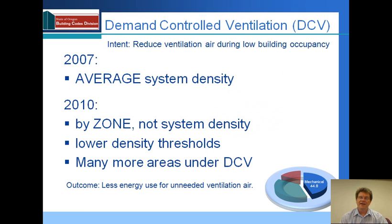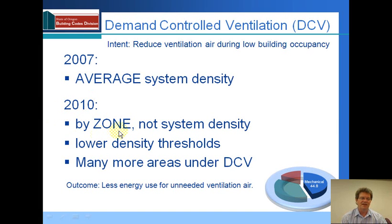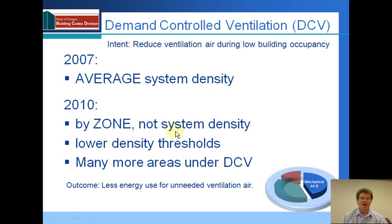Demand-controlled ventilation has a significant change. Demand-controlled ventilation was required in the prior code, but based on average system density. This typically meant that when you had one unit serving an area with a high density — say a classroom, a gymnasium, or a large auditorium or movie theater — you would have demand-controlled ventilation required. This new requirement is by zone, not system. Under the old code, if you had one zone on a large system, it would average out so that the density requirement was not triggered and demand-controlled ventilation would not be required. In the new code, it's required by zone, not by system.